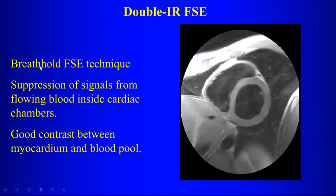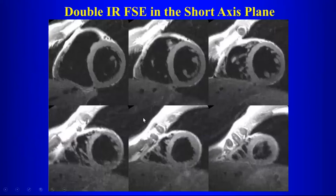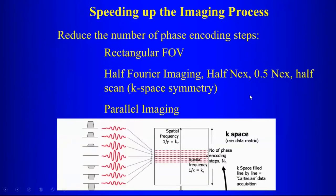This is a breath hold fast spin echo technique that allows us to get images within the breath hold. We can suppress signal from flowing blood inside the cardiac chambers, giving very good contrast between the myocardium and the blood pool. Here are a series of short axis views using double inversion recovery fast spin echo — very nice anatomic definition and very nice suppression of the blood.